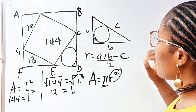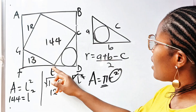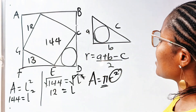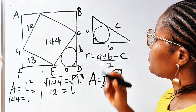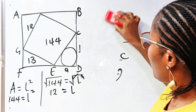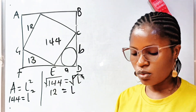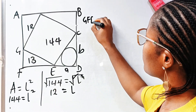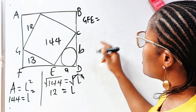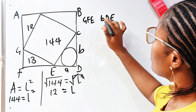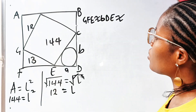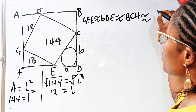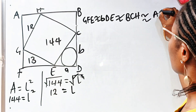We are going to make use of this formula. If we label this triangle, this side — which is the short side — is A, and the longer side is B. Even though this is not drawn to scale, when you draw it to scale, you will notice that triangle GFE is congruent to triangle EBD, and this is also congruent to triangle BCH, and also congruent to triangle AGH.